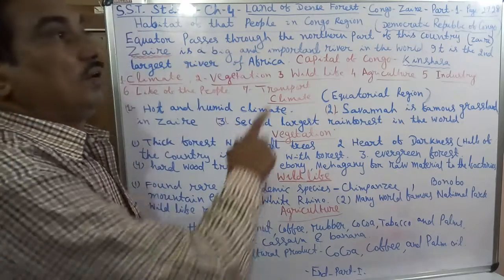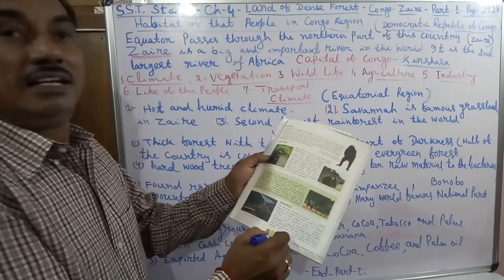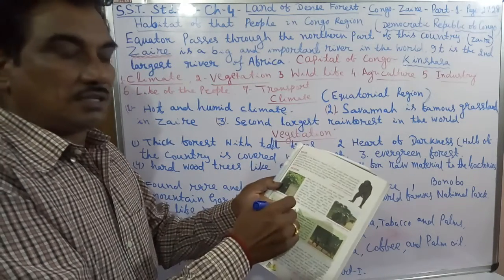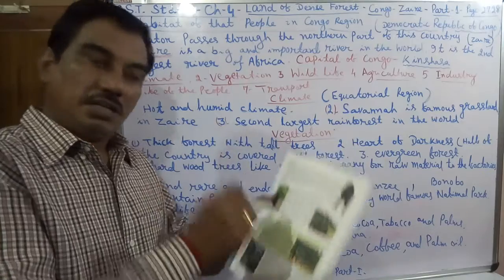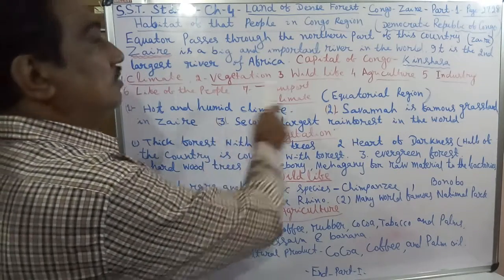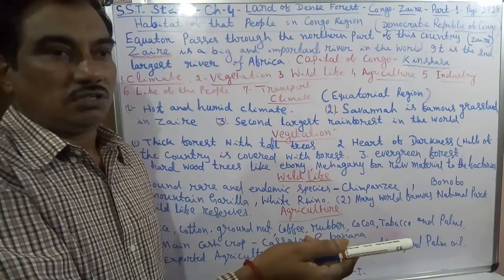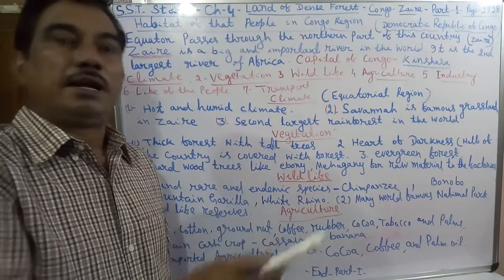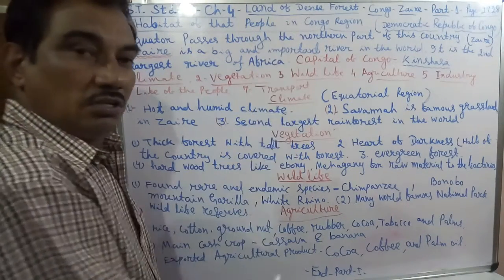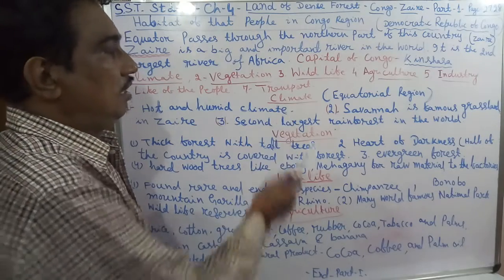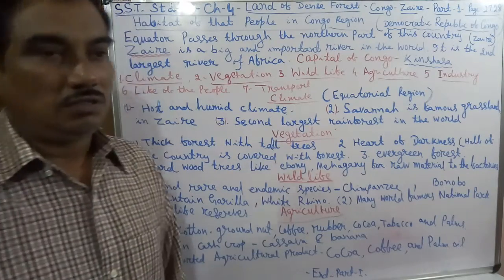That is all about Part 1. Next class we will discuss the remaining parts of the topic — industry, life of the people, and transport — in video lecture Part 2. First of all, write the questions and answers for climate, vegetation, wildlife, and agriculture. Thank you all.